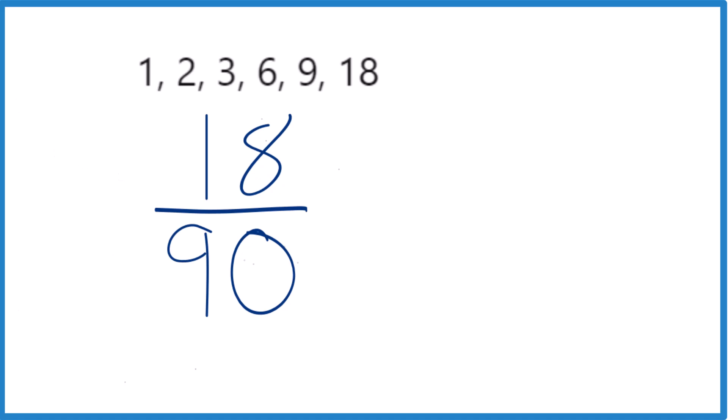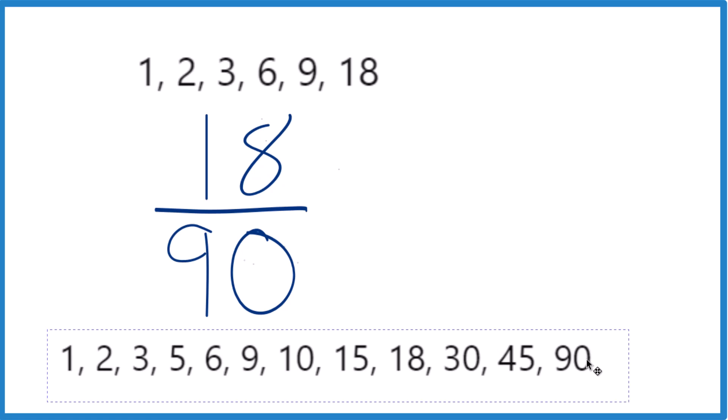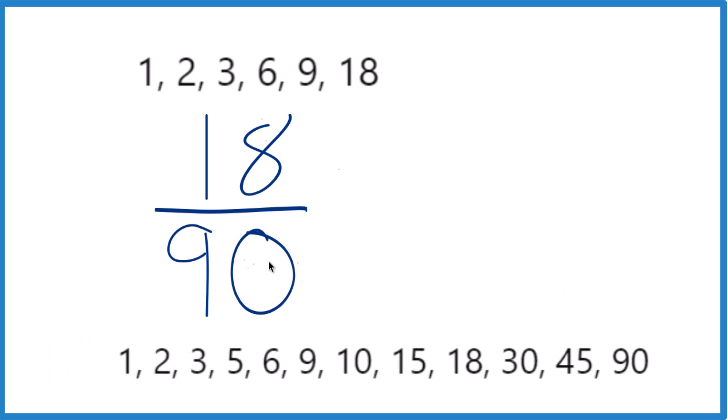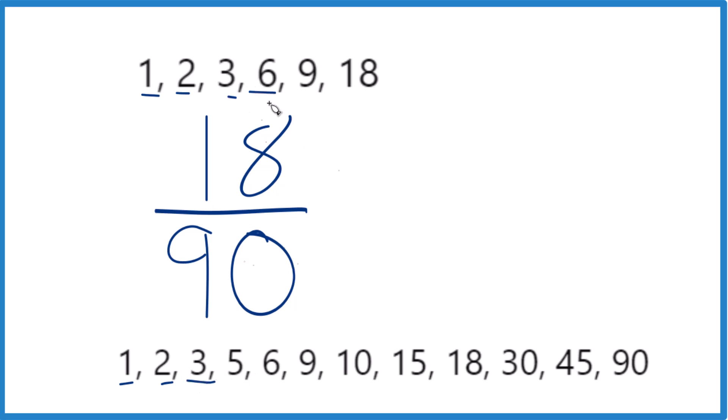For 90, there's a whole bunch of them. So what we want to do is find the common factor, the greatest common factor. So we can see that when we look at this, 1 that's in common, but 2 is in common, 3 is in common, 6 that's in common, 9, and then 18 is in common.